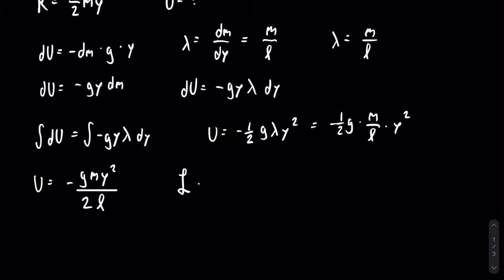We now have everything we need to make our Lagrangian. The Lagrangian equals the difference between kinetic and potential energies, so it equals one-half m·y-dot-squared plus mg·y-squared divided by 2l.